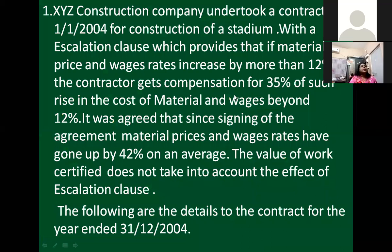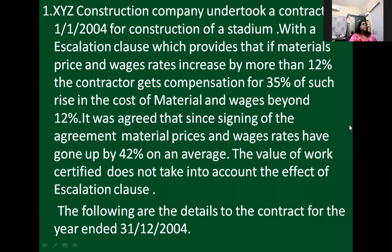XYZ Construction Company undertook a contract on 1-1-2004 for construction of a stadium with an escalation clause which provides that if material prices and wage rates increase by more than 12%, the contractor gets compensation for 35% of such rise in the cost of material and wages beyond 12%. It was agreed that since signing of the agreement, material prices and wage rates have gone up by 42% on average. The value of the work certificate does not take into account the effect of the escalation clause. The following are the details for the contract for the year ended 31-12-2004. The contract started on 1-1-2004.